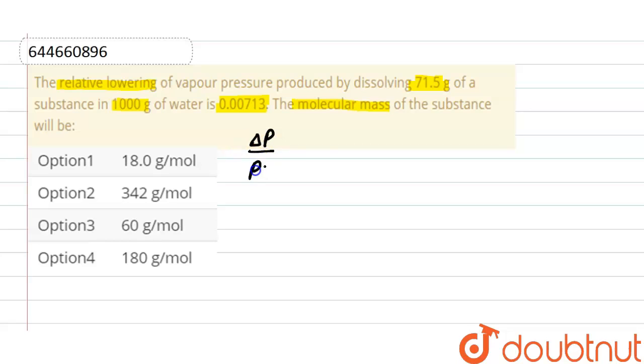is equals to mole fraction of solute. And here relative lowering of vapor pressure is given, that is 0.00713, equals to mole fraction of solute. We will subtract both the equations by one, both sides by one.